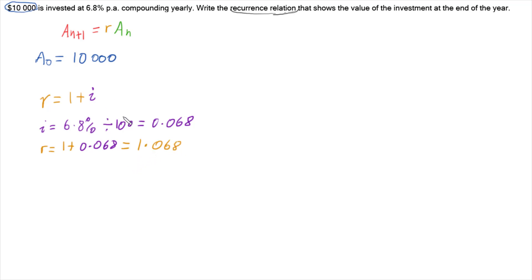And so now we can go and have a look at our problem here. So we can finally write our recurrence relationship. I know everything, I know the formula. So our relationship is going to be A_{n+1} is going to be 1.068 multiplied by A_n. And lastly, we finish off by saying where our first term, A_0, is 10,000.